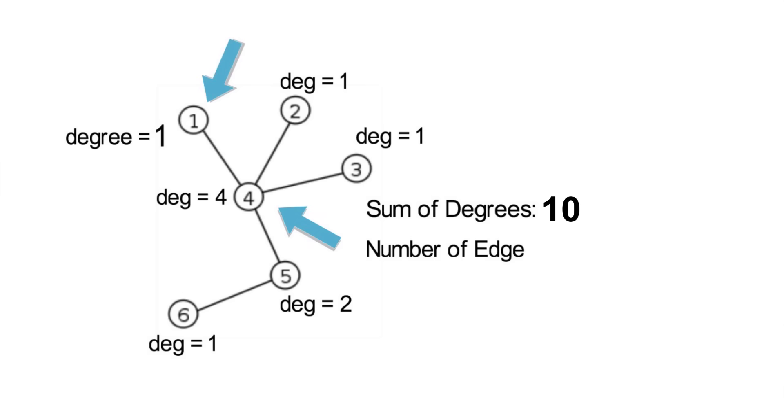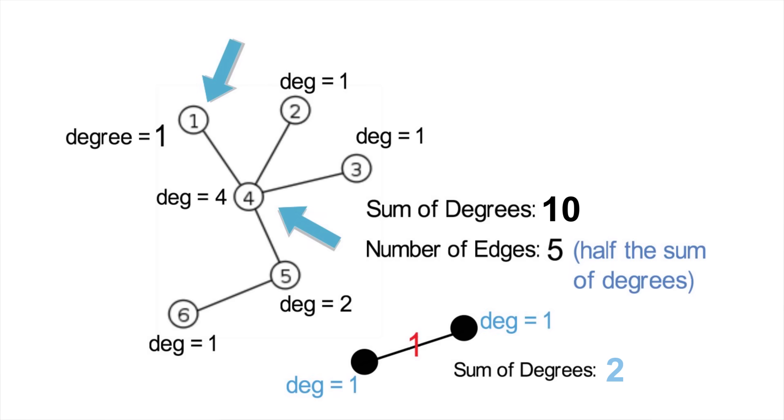Now that we have that, count the amount of edges or lines that you see. You'll find there are 5, which is half the sum of the degrees. If we look closer, we'll see this is always true. Every edge connects two nodes. So that one edge makes both nodes have a degree of 1 for a total of 2. So we have something very important here. The sum of the degrees, adding every single line that leaves each dot, is always twice the amount of lines or edges that you see.